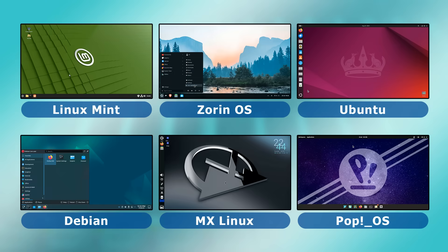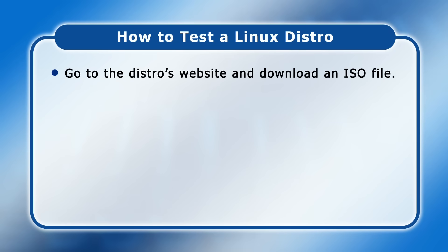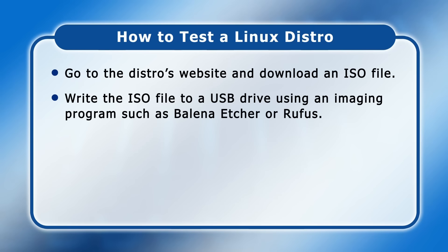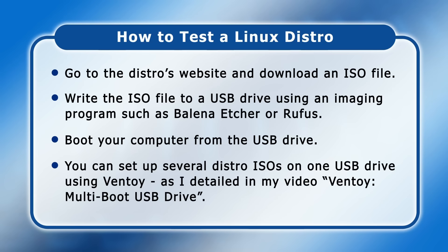So there we are — we've now viewed the six distros I would recommend new users to choose from. It's very important to judge the look and feel by trying several distros out for yourself. Basically, you need to go to the distro's website, download an ISO file, write it to a USB drive using an imaging program such as Balena Etcher or Rufus, and then boot from that USB drive. Or, if you want to go back and forth between a lot of distros in your testing, you can set several up on one USB drive using Ventoy, as I've detailed in my video on the Ventoy multi-boot USB drive tool.